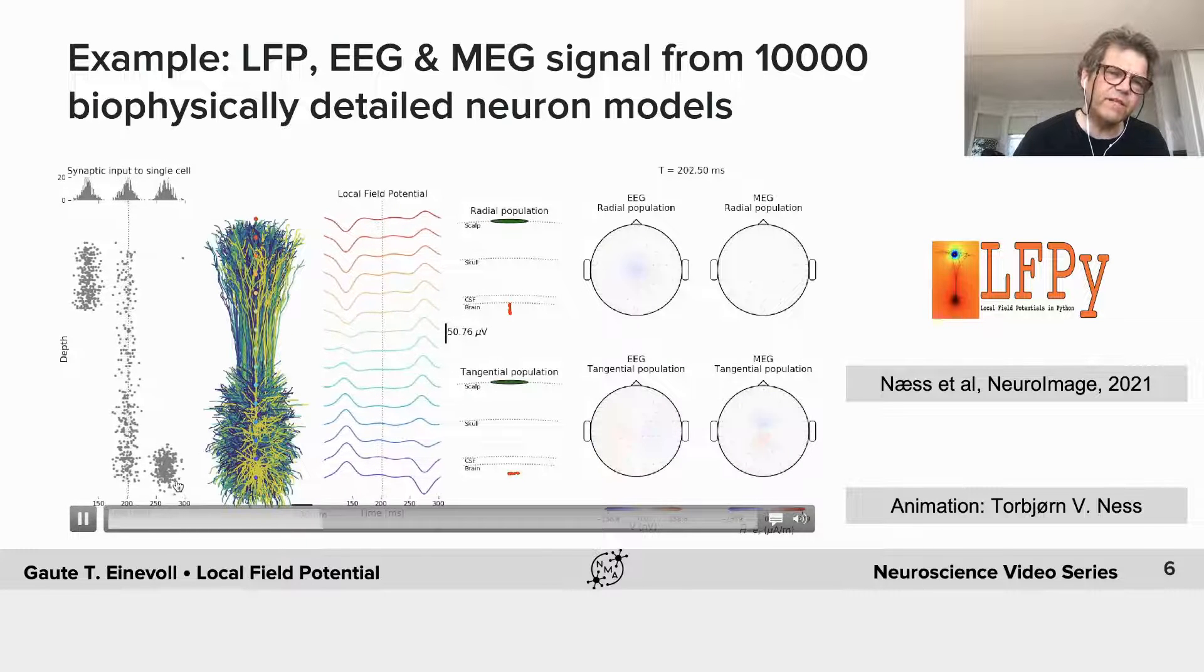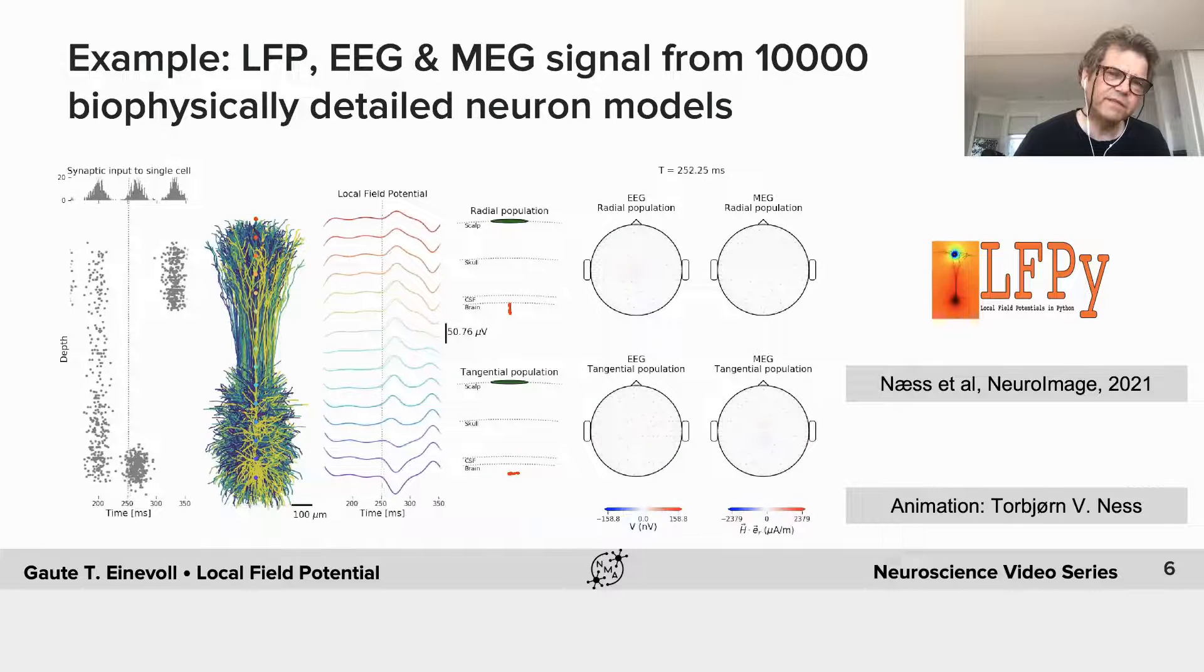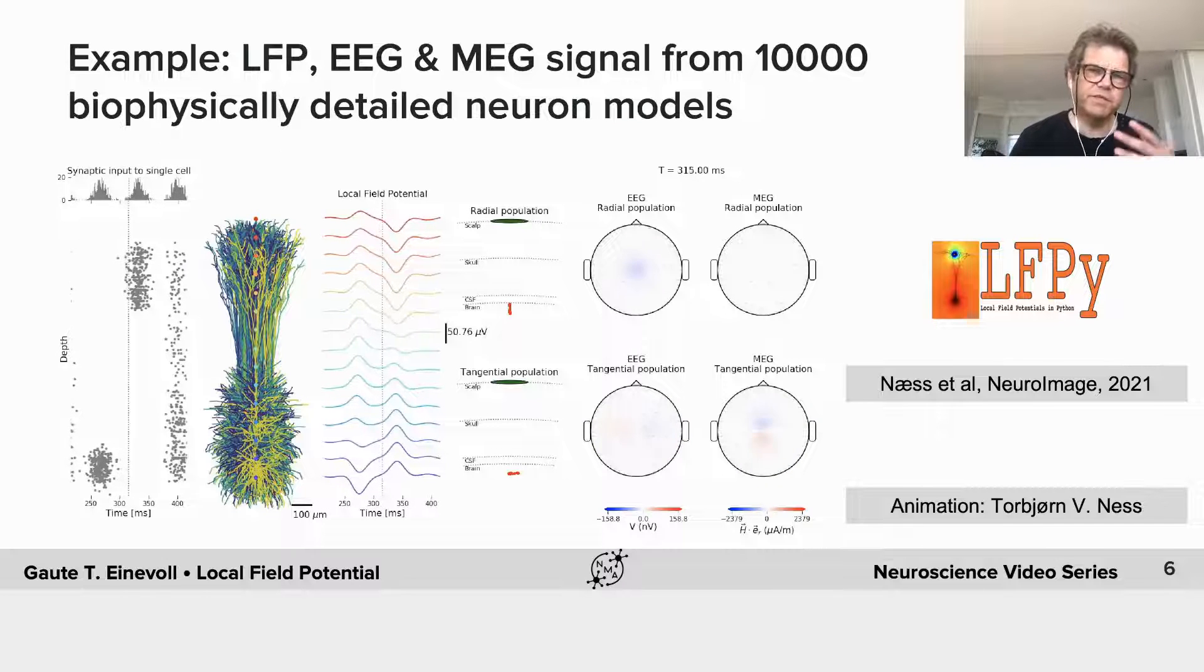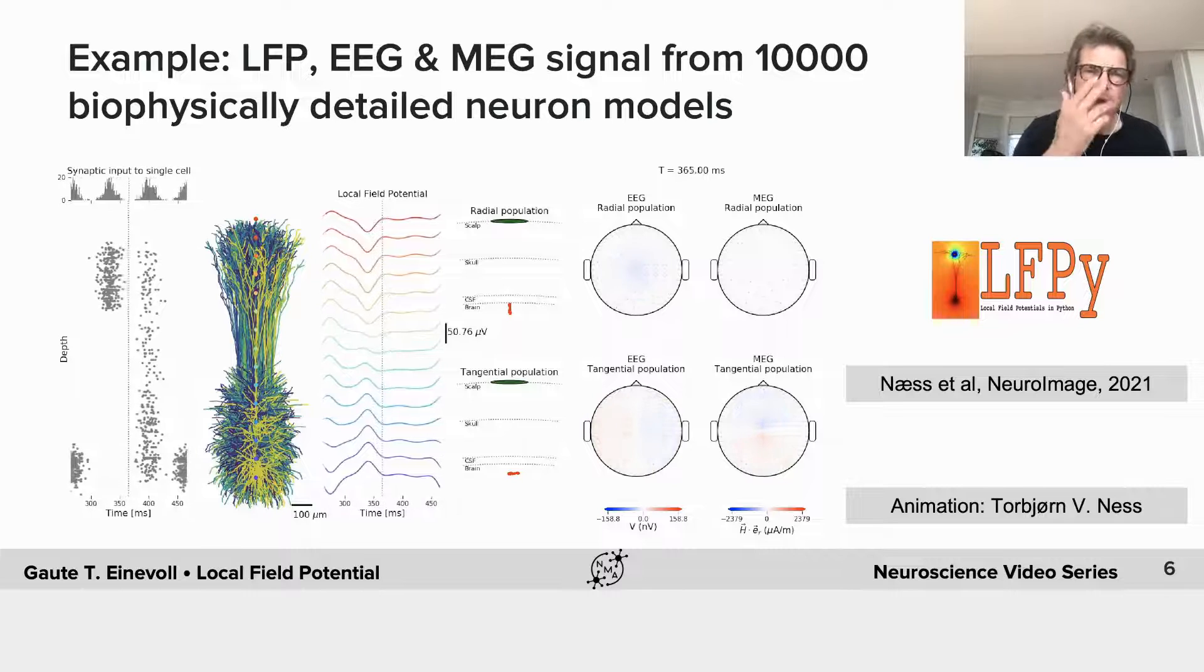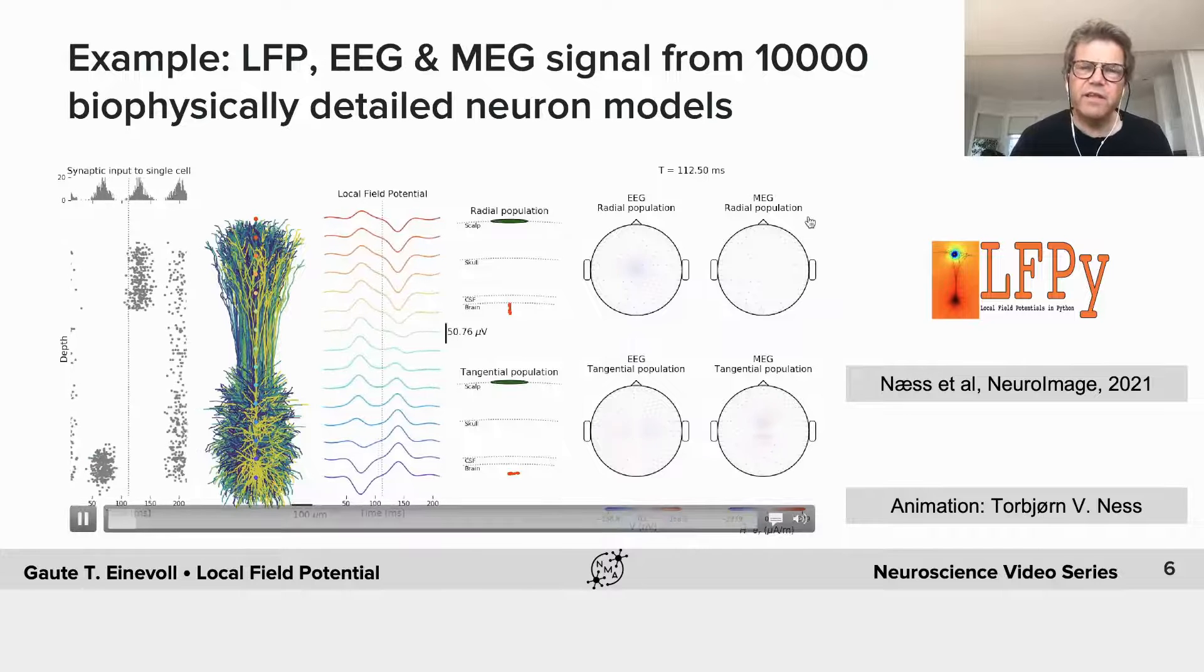And then when it's all at the bottom, we get the opposite. So we see that the LFP, the shape, the positivity and negativity, which is placed, and if it's evenly spread out, you don't see anything at all.